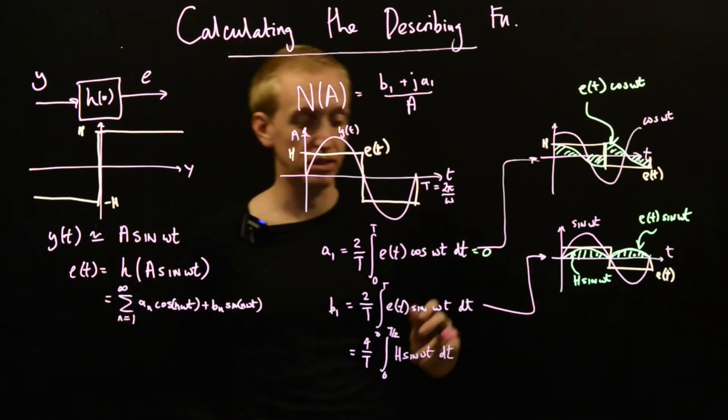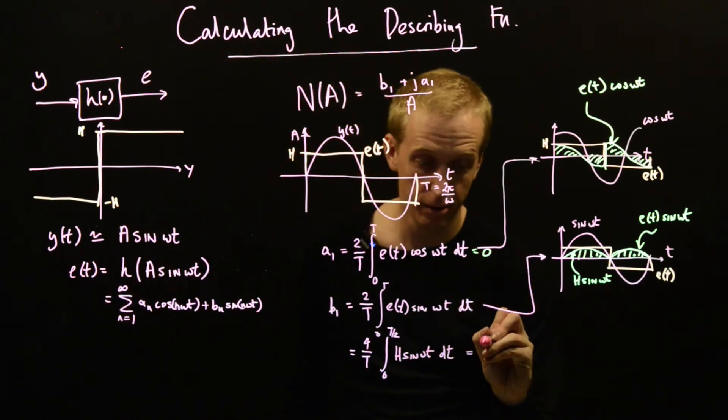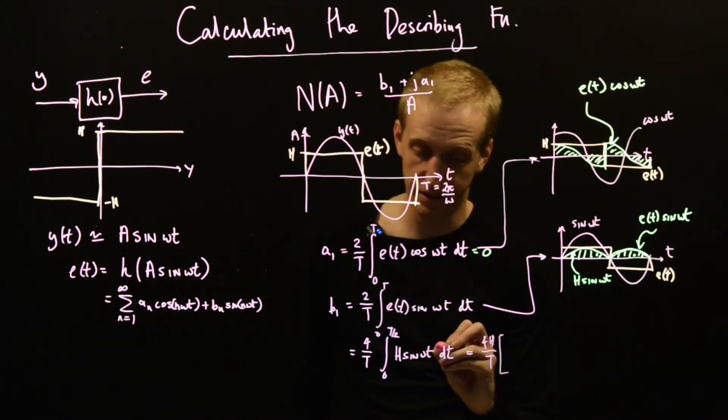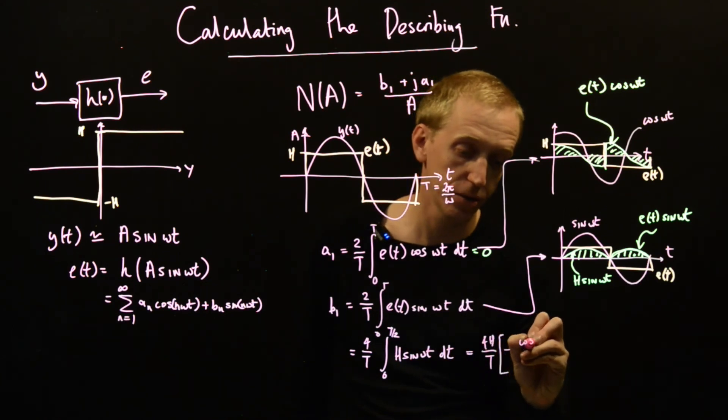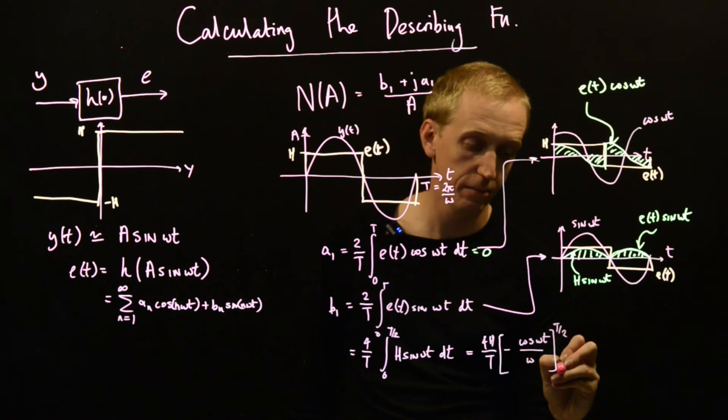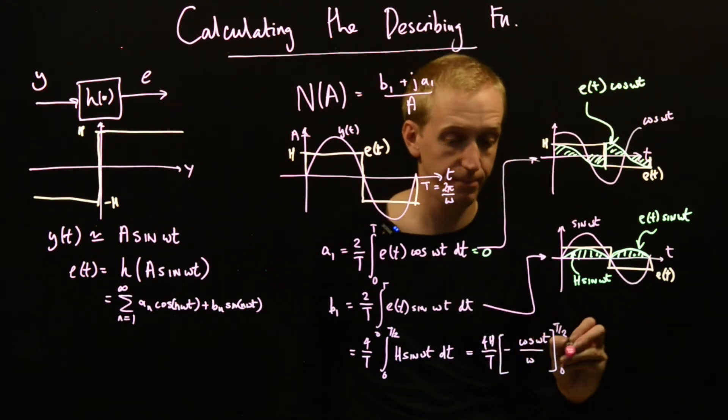And now we just have a nice straightforward integral to do. And so what do we get? Well, we have 4h over T. And the integral of sin(ωt) is minus cos(ωt) over ω. We need to evaluate this between 0 and T over 2.